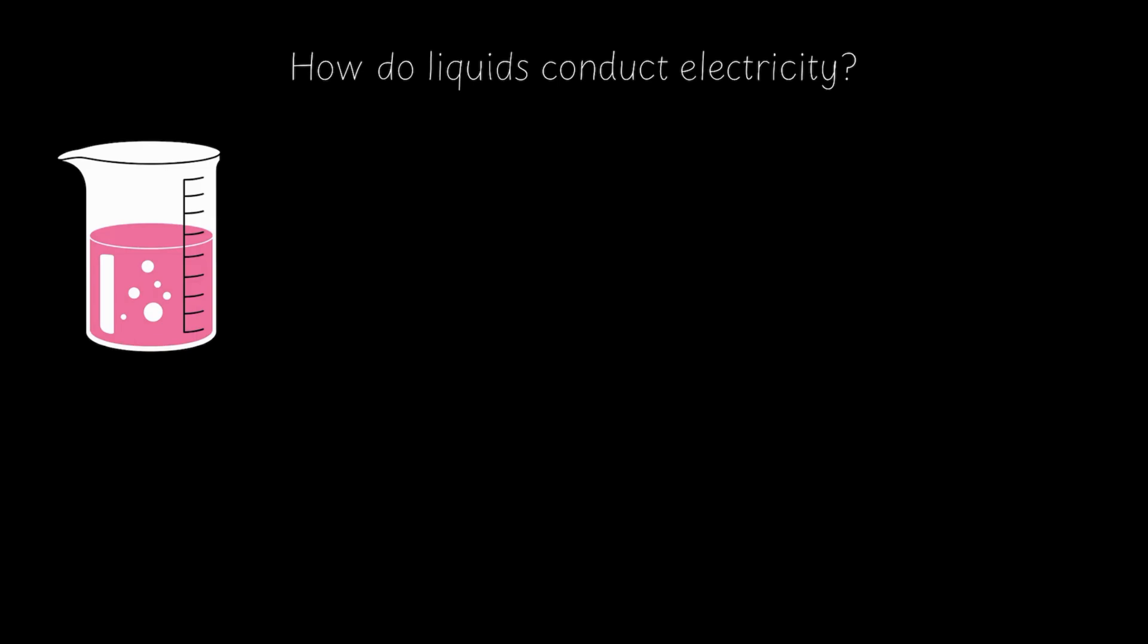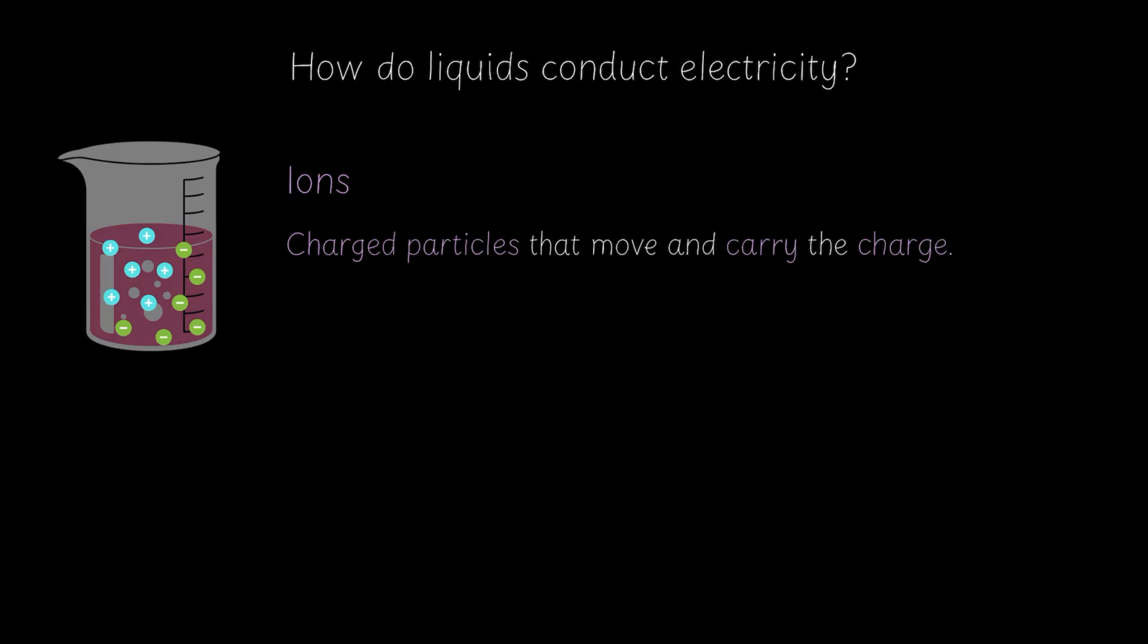You see, liquids conduct electricity not because electrons move through them, but because of ions. Ions are charged particles that move and carry the charge. And how do ions form? If you need a quick recap on that, continue watching or else you can skip to the next section of the video.